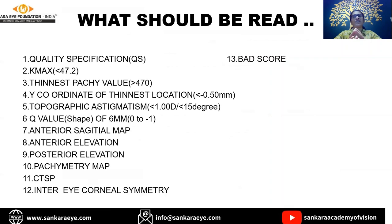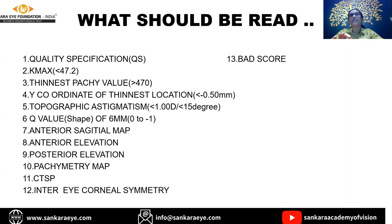To summarize what we have seen: we looked at quality specification, K values, the anterior sagittal map, anterior and posterior elevations, and pachymetric maps. We also understood the BAD score for detecting very subtle subclinical forme fruste disease. Most importantly, inter-eye corneal symmetry or asymmetry must always be assessed through topographic and pachymetric differences, as they give subtle clues to disease.